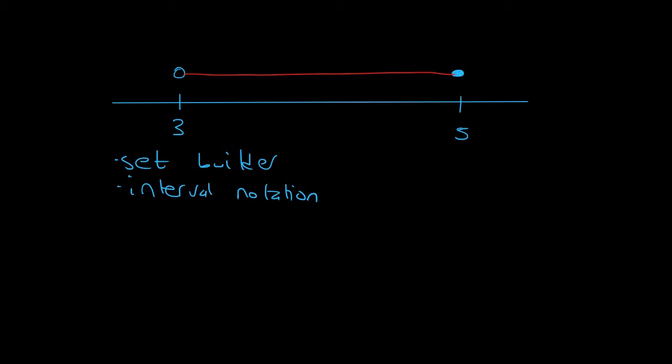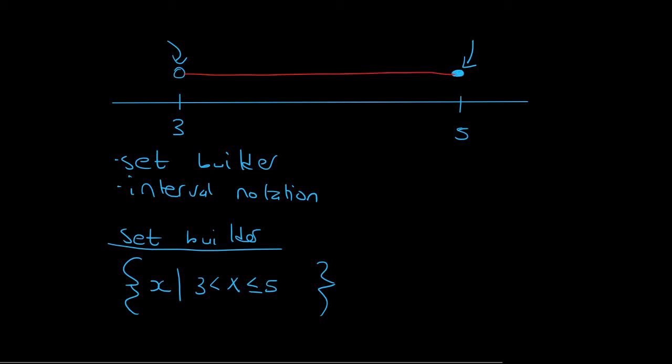Let's start with set builder notation. That's the long one which has three different components. We're going to make our funny brackets. First part is just to say x. Then we're going to say that x must be any number bigger than 3 and smaller than and equal to 5. Smaller than and equal to because this 5 is included but we're not including the 3. We then say that x is an element of real numbers.